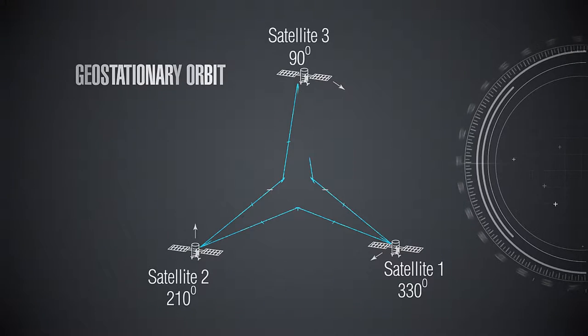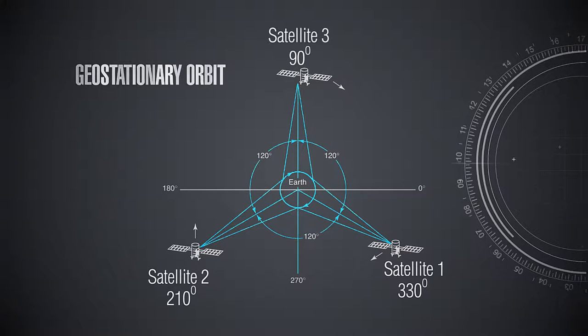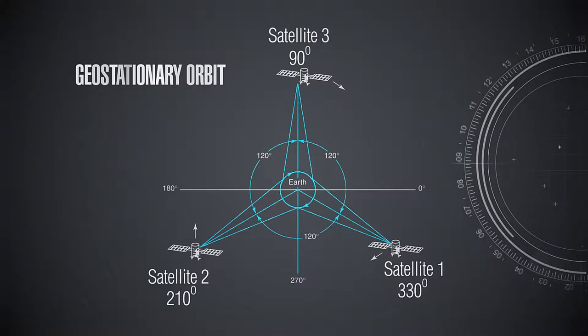The geostationary orbit is very important. It is a circular orbit with a radius of approximately 36,000 kilometers from the earth's surface — about 42,000 km from the center of the earth. At that distance, the period of rotation of the satellite around the earth is 24 hours. Since the satellite moves around the earth and the earth rotates in the same direction, from a user on the ground it looks as if the satellite is not moving.